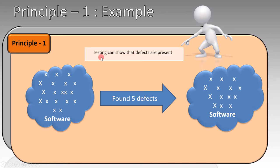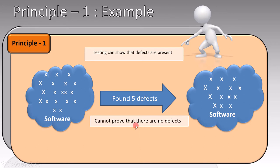This is why we say that testing can show that defects are present. Because in this example, we found 5. So we know for sure that there are 5 defects in the software, but we cannot prove that there are no defects in the software.